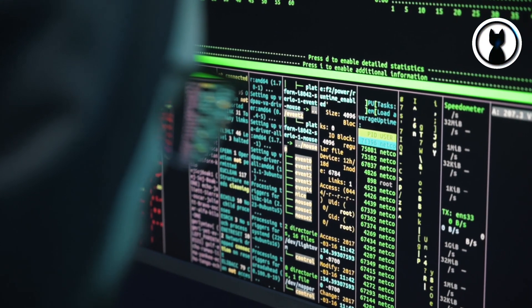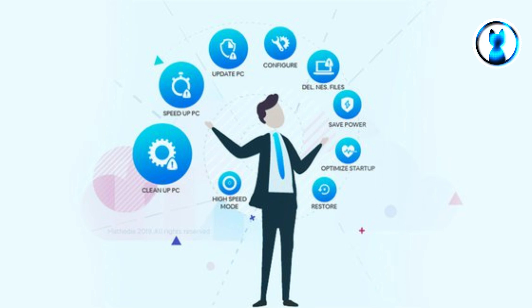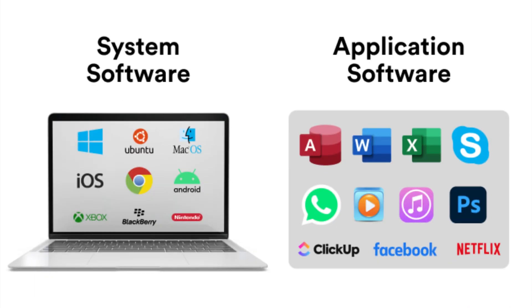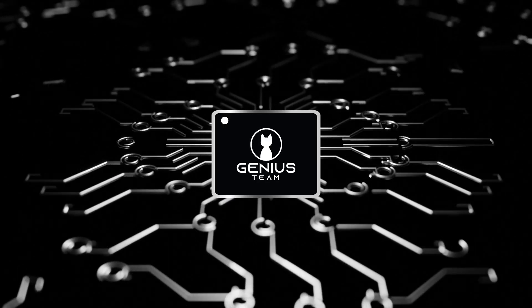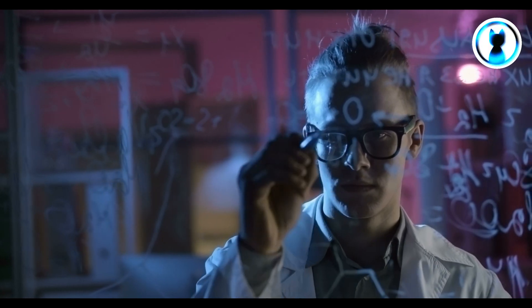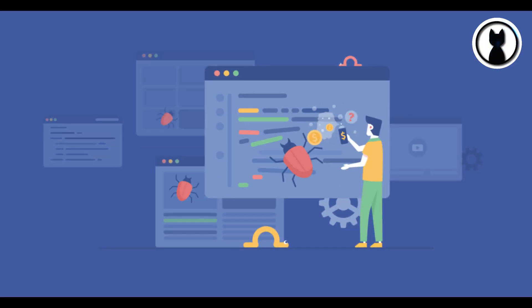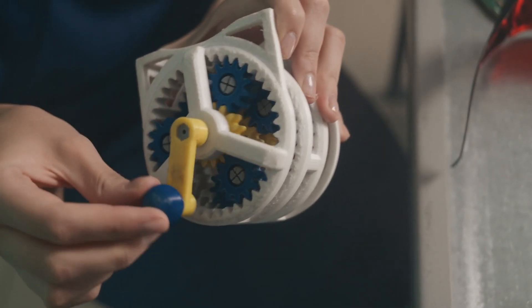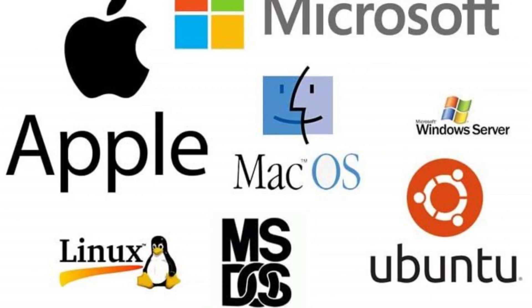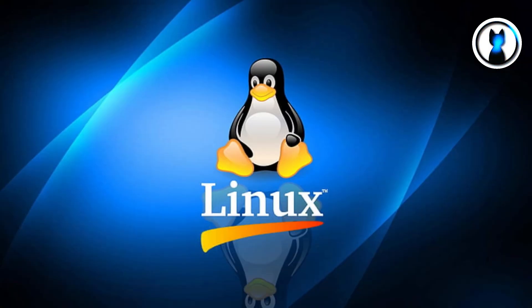There are various types of software, and they can be broadly categorized into three main types. First, system software. This is the backbone of your computer, managing hardware components and providing a platform for other software to run. Examples include operating systems like Windows, macOS, and Linux.